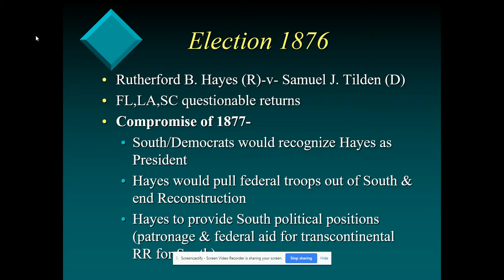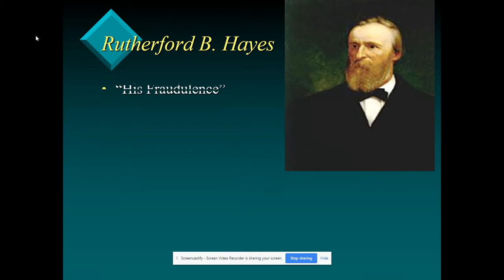Hayes is also going to provide the people who supported his election, as part of the compromise, with jobs in his administration working for the Transcontinental Railroad and other federal positions. This, again, is because of the patronage and spoils system. Rutherford B. Hayes, also known as 'his fraudulence,' does become president through the Compromise of 1877.